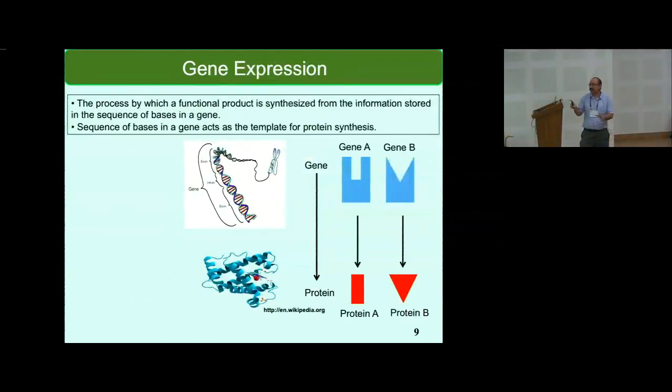Gene expression is the most important process that happens inside a cell. The information contained in the sequence of bases in the gene is used to synthesize a functional molecule which is called a protein. One gene gives rise to one protein, another gene will give rise to another protein. This process is the most important because genes by themselves do not do anything. It is the protein molecules which are the functional molecules.